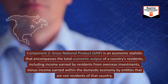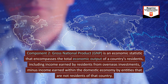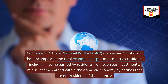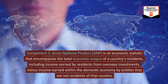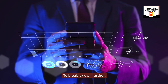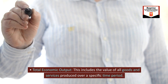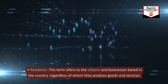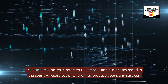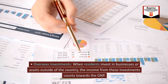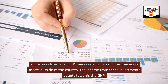Component 2: gross national product (GNP) is an economic statistic that encompasses the total economic output of a country's residents. This includes the value of all goods and services produced over a specific time period by citizens and businesses based in the country, regardless of where they produce. When residents invest in businesses or assets outside of the country, the income from these investments counts towards the GNP.